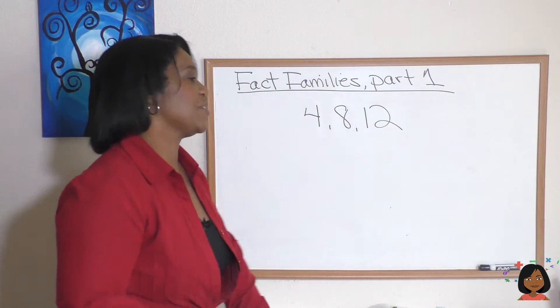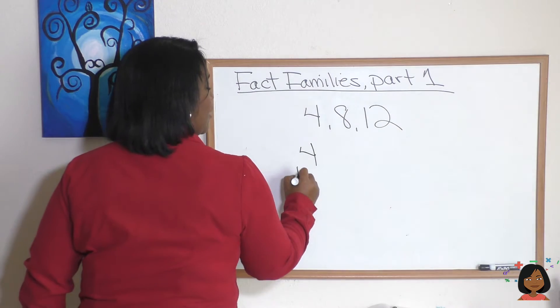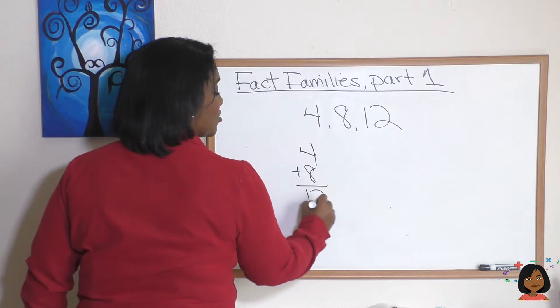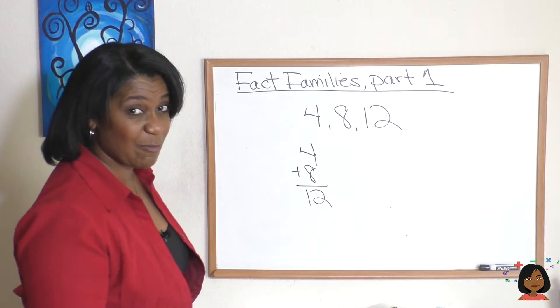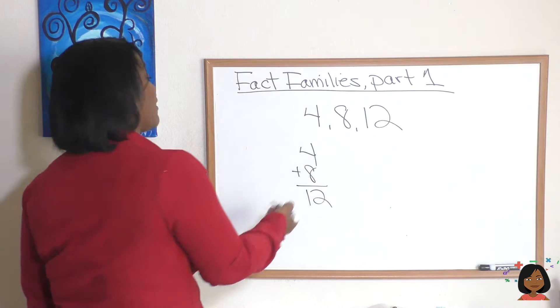Well we know that 4 plus 8 gives us 12. But remember the commutative property of addition, I can flip those around. 8 plus 4 also equals 12.